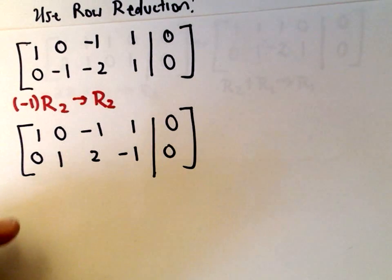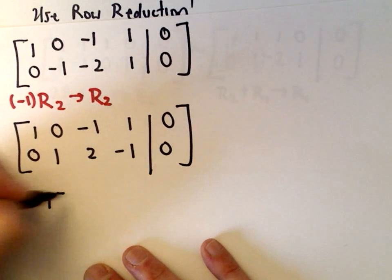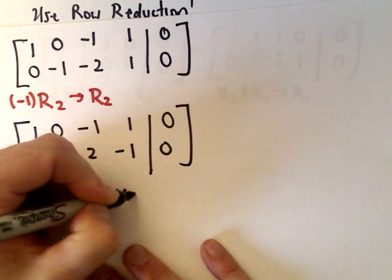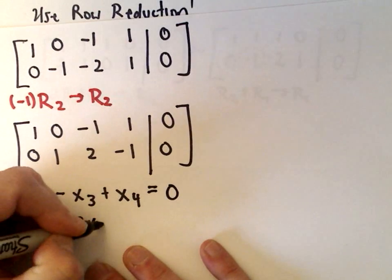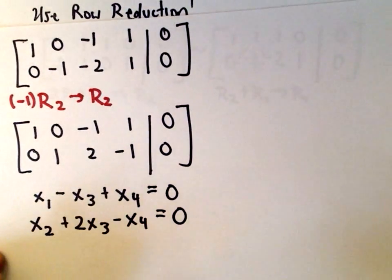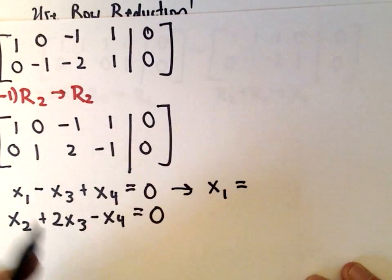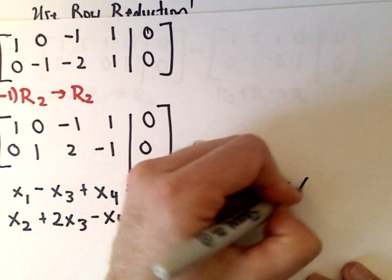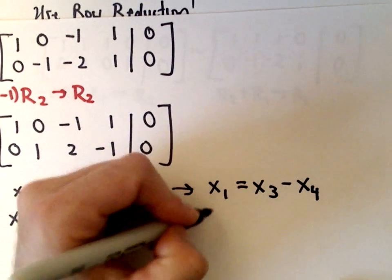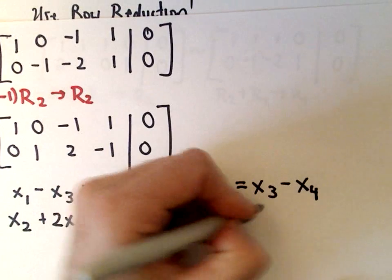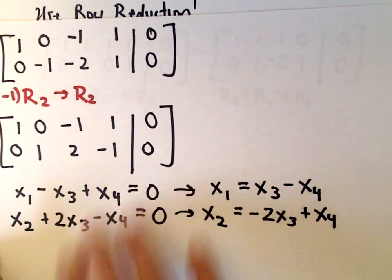Now in reduced echelon form, rewriting as a system of equations: x1 − x3 + x4 = 0, and x2 + 2x3 − x4 = 0. We have a couple of free variables here. Solving the first equation for x1: x1 = x3 − x4. Solving the second for x2: x2 = −2x3 + x4. That's all we do to find the null space — just row reduction.